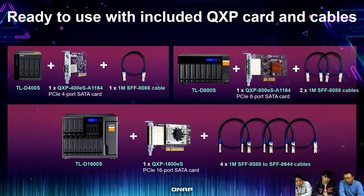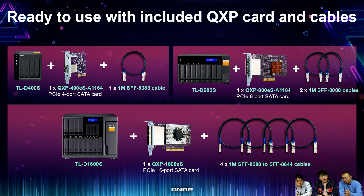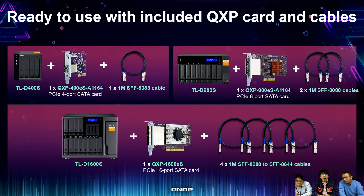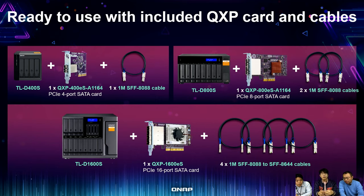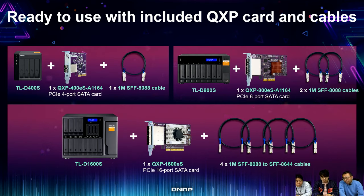For the four-bay model you get the QXP-400ES four-port card and one cable, because each cable corresponds to four SATA hard drives. For the eight-bay model we include two cables. Users don't need to buy the TL expansion unit and then separately buy an extra card for the host — it is included in the package. There's no extra cost beyond what you spend on the J-Bot.